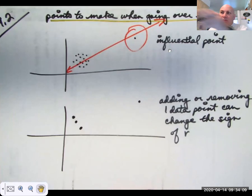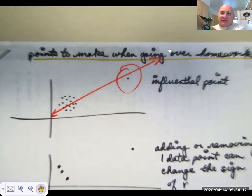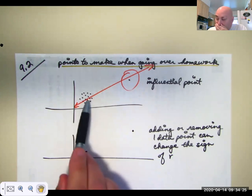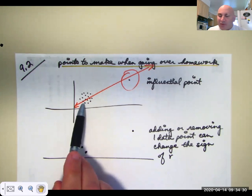Now I do want to make a couple of points. So there is such a thing as an influential point. If you look at this data set down here you can see that there's no regression line that's going to go through that. That's going to have an r value of zero.